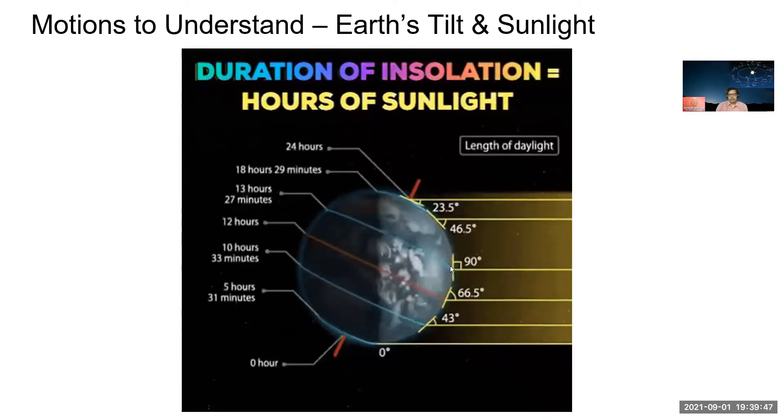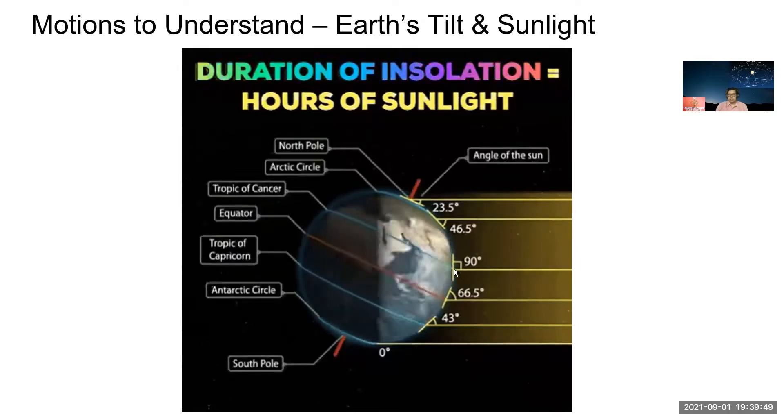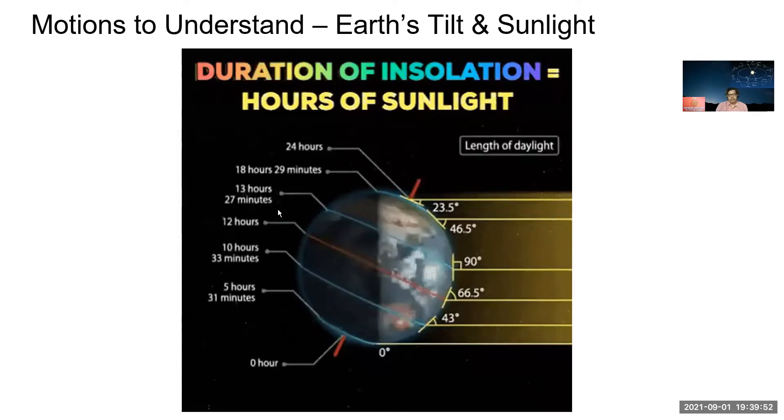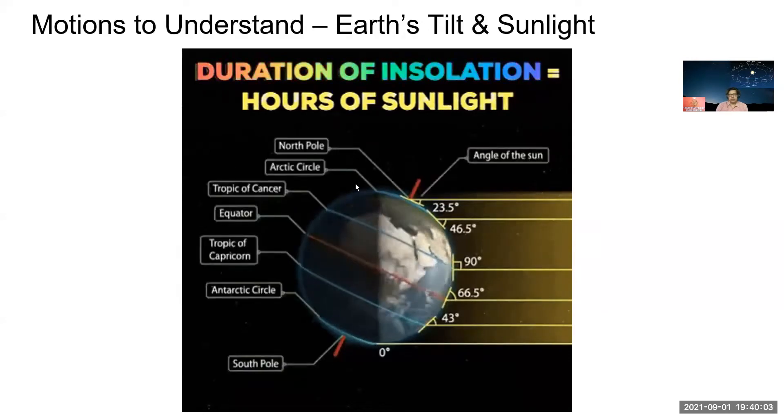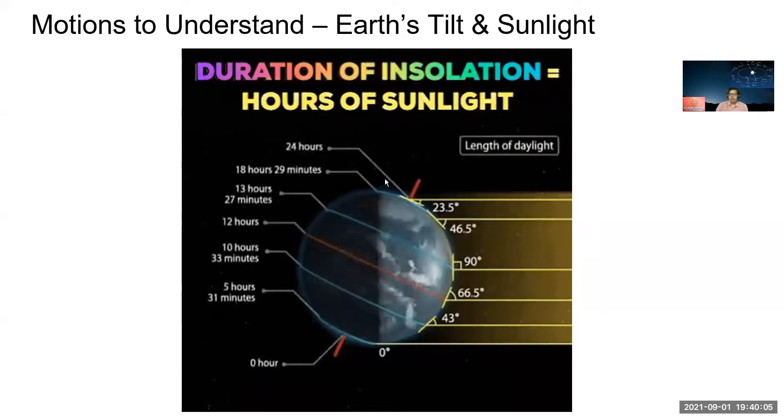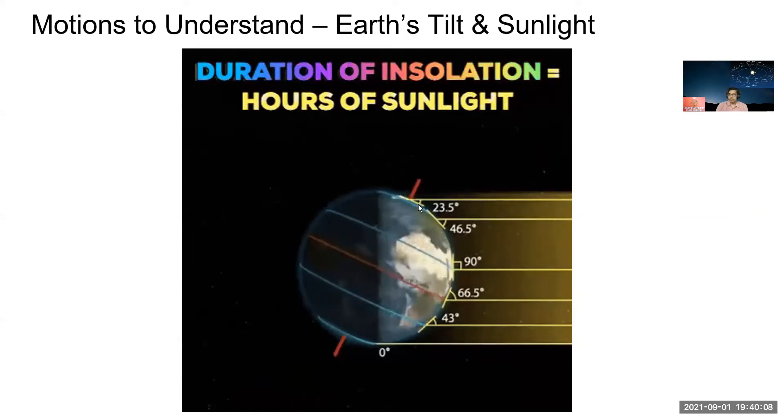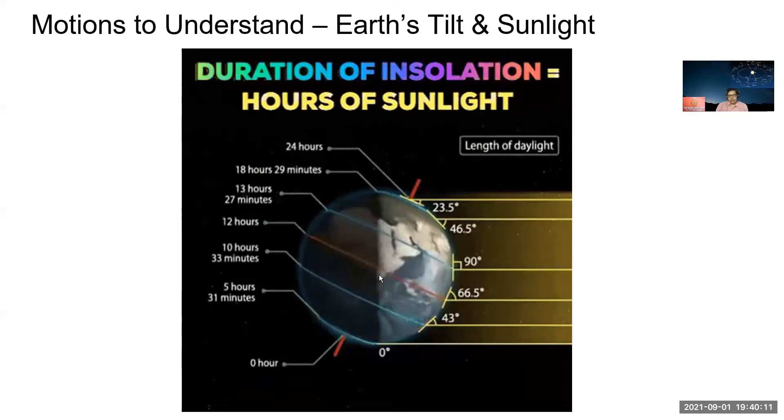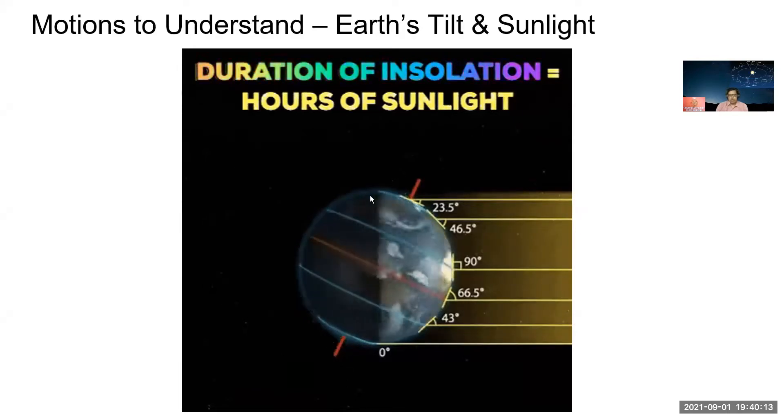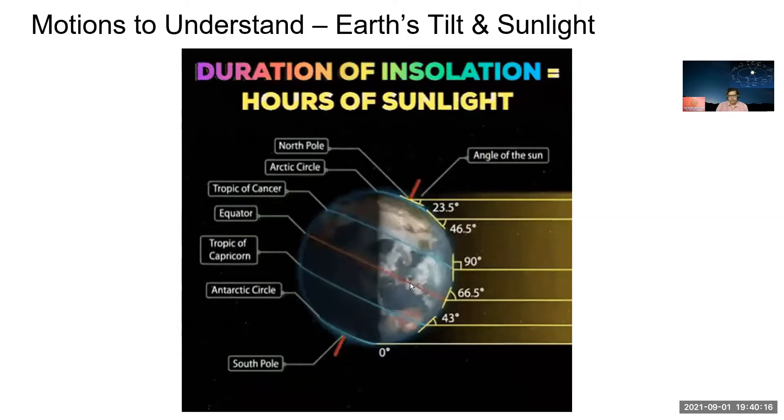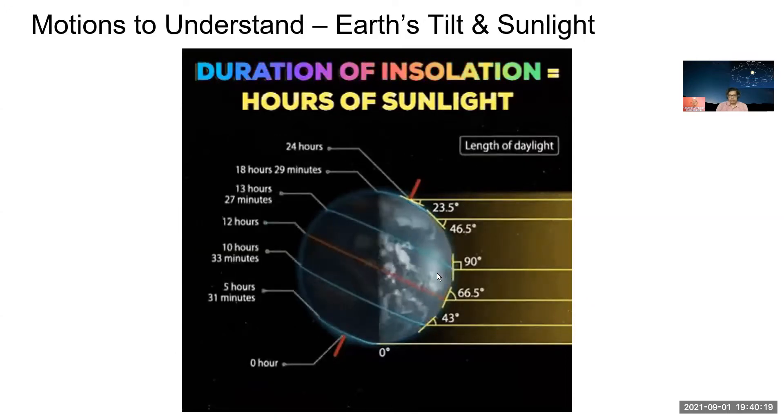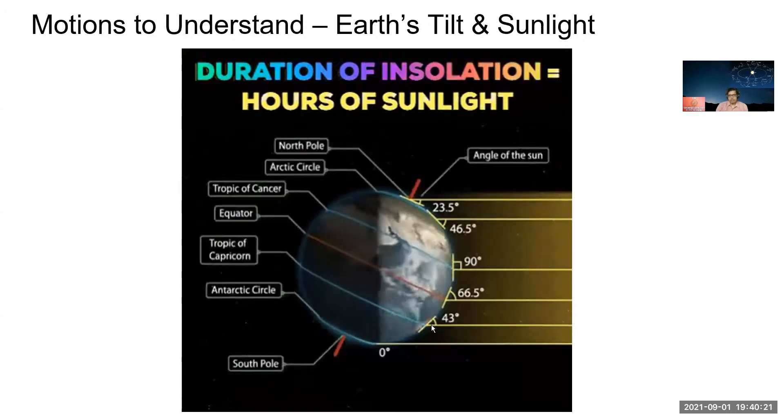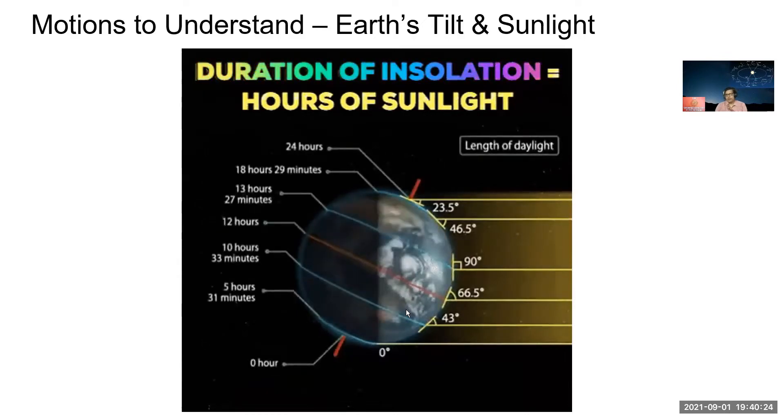Since this is 90 degrees here, the sun rays are falling straight here. You find the length of daylight is more compared to below, let's say the equator. So as you go up here, the length of day is much more because more portion of Earth is here having the sunlight. If you notice here, this portion has more of the northern hemisphere having sunlight but less portion of the southern hemisphere is having sunlight. This tilt is one of the major reasons for many things including seasons.